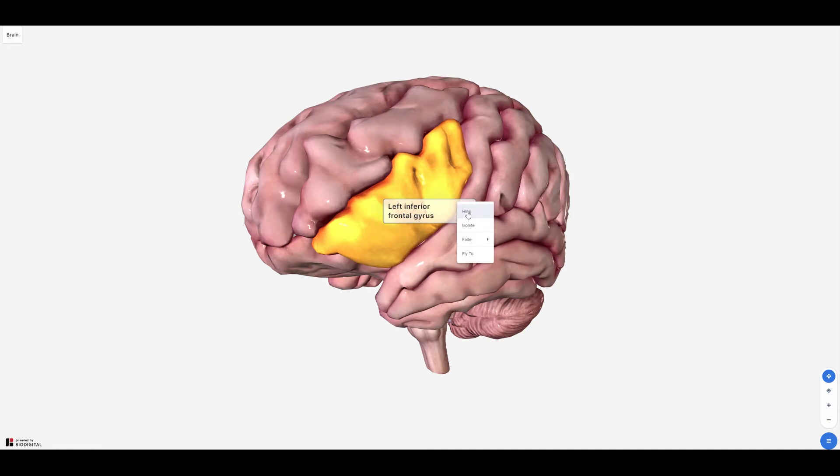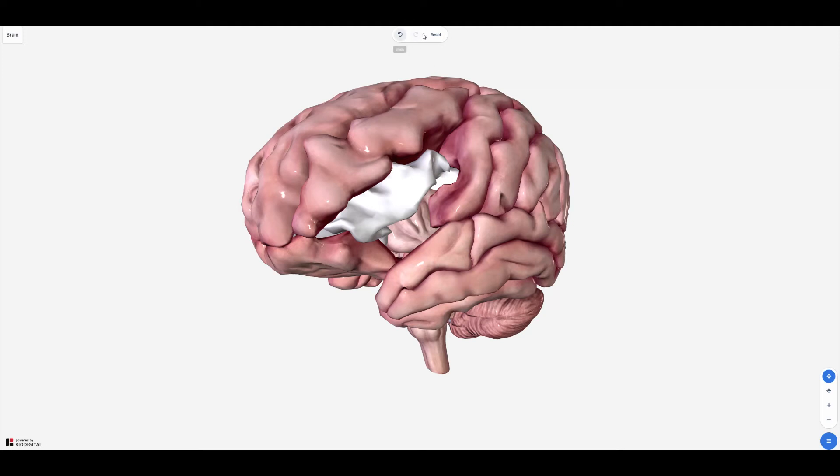Hide removes the structure from view. This is much like dissecting the structure. The menu at the top of the page allows you to reset or undo any changes.